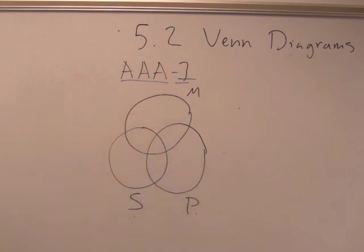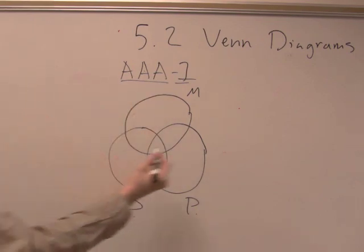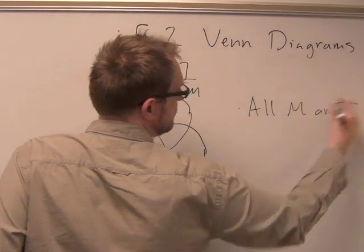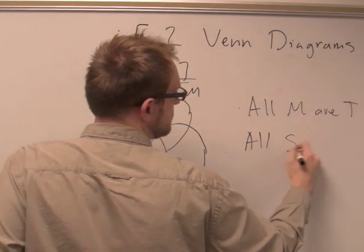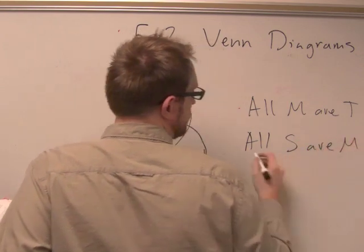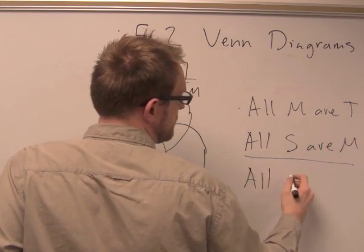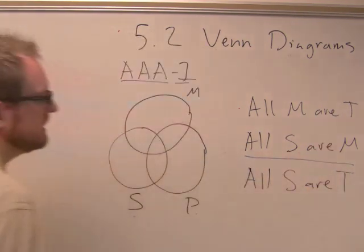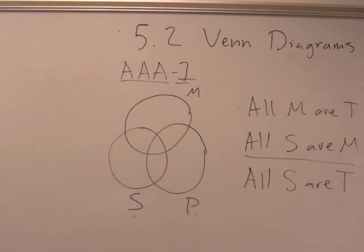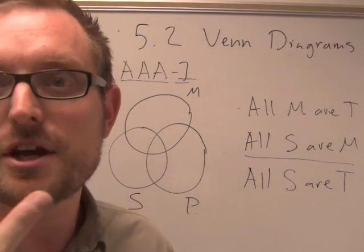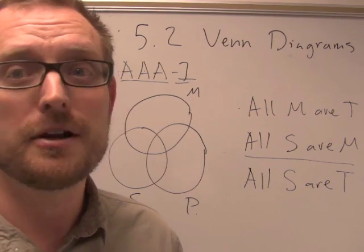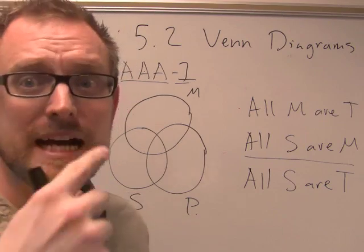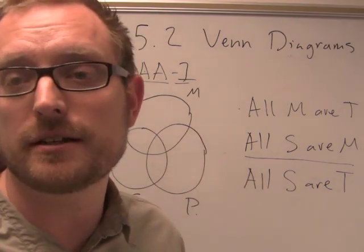We can put an M up here, which designates the middle term. So let's think about how we would draw this. The first proposition is that all men are mortal, right? All M are T. All persons named Socrates are men or humans. Therefore, all persons named Socrates are mortal. That's the argument. Remember, we only diagram the premises.